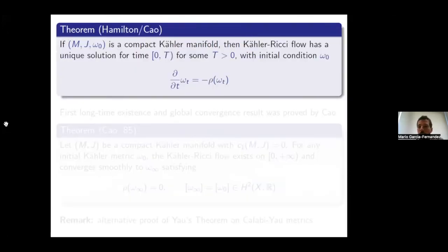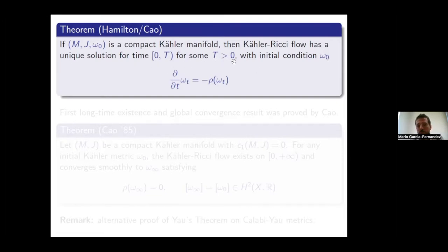What do we know about existence for this flow? This is a classical result from the 1980s due to Hamilton and Cao: if you have a compact Kähler manifold, then the Kähler-Ricci flow with initial condition ω₀ has a unique solution for some time interval [0, T). So at least short-time existence is granted, and this is a well-posed problem for any initial condition on a compact Kähler manifold.